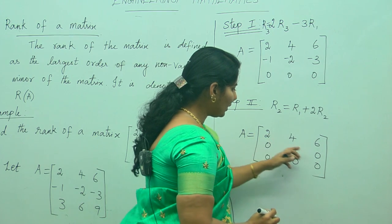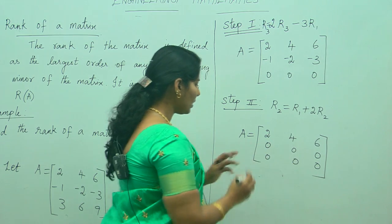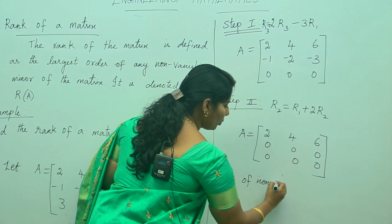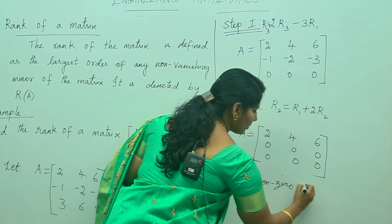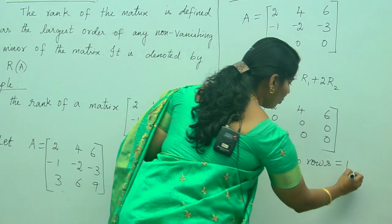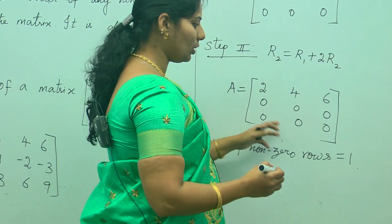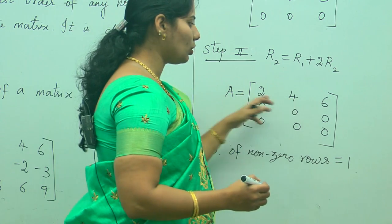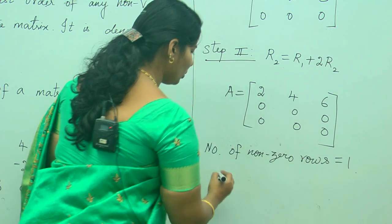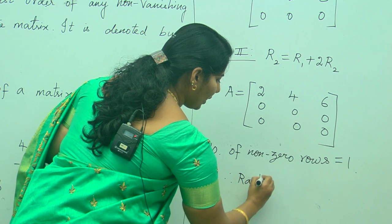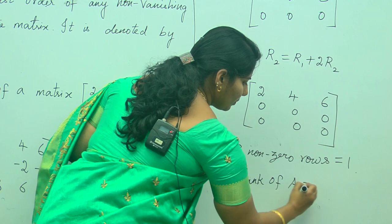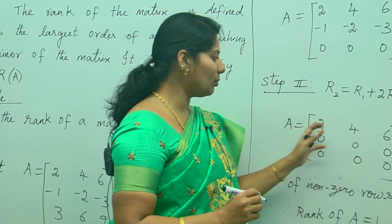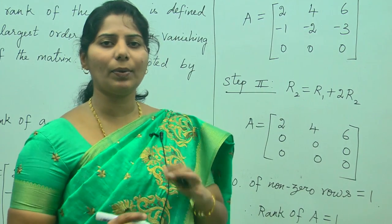Now we have got all the below-diagonal elements as zeros. You can see the second row and the third row are full of zeros. Only the first row has no zeros, so we call it a non-zero row. Therefore, the number of non-zero rows equals 1, and therefore the rank of A equals 1. The condition to find the rank of a matrix is to make the below-diagonal elements zero using the upper triangular matrix method.